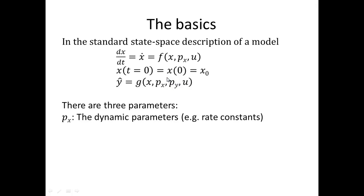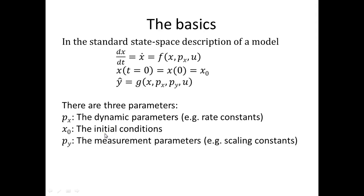To sum up, there are three types of parameters: the dynamic parameters px, which may be rate constants or other things like volumes or thermodynamic properties; the initial conditions X0; and the measurement parameters py, which are usually things like scaling parameters or offset parameters. Typically you collect these three types into a single parameter vector that you want to find values for.